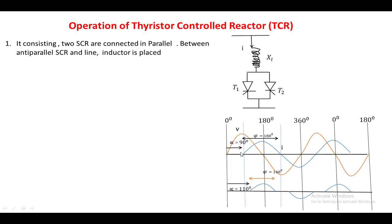When the firing angle is 90 degrees, the conduction angle (psi) is 180 degrees. If the firing angle is increased to 110 degrees, the current waveform magnitude decreases and the conduction angle becomes 140 degrees. Further increasing the firing angle reduces the current magnitude further. The conduction angle is given by: psi = 2(π − α).